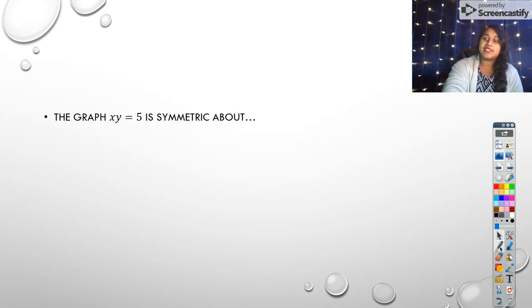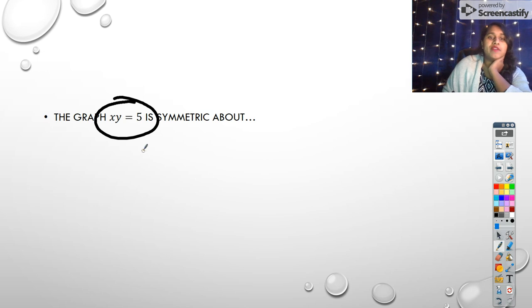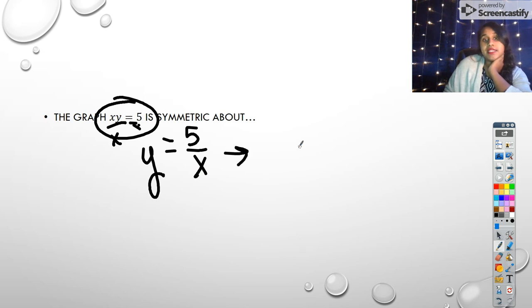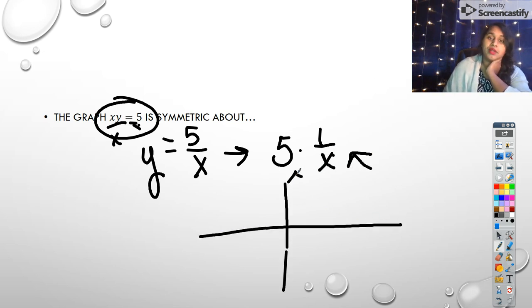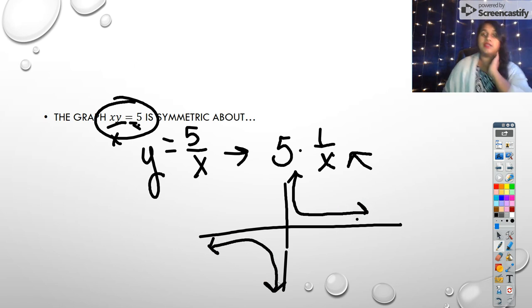This one asks if the graph is symmetric about where the graph is symmetric. Well, currently, the way it is doesn't help me recognize what function this is. So if I get y by itself, that means divide by x on both sides, then I'm left with 5 over x. And again, I can simplify this to show me that that's actually 5 times 1 over x. And look, isn't that a parent function? In fact, that's the reciprocal, inverse, rational, whatever you want to call it, parent function, which looks kind of like this.